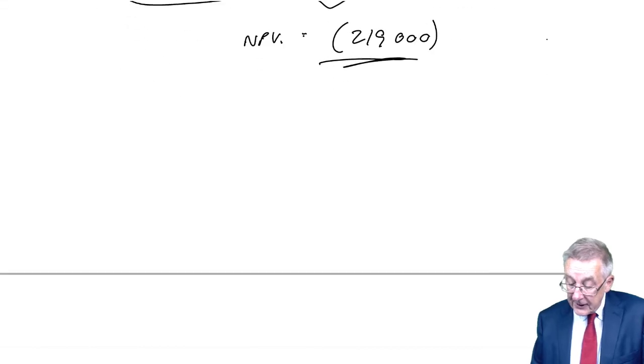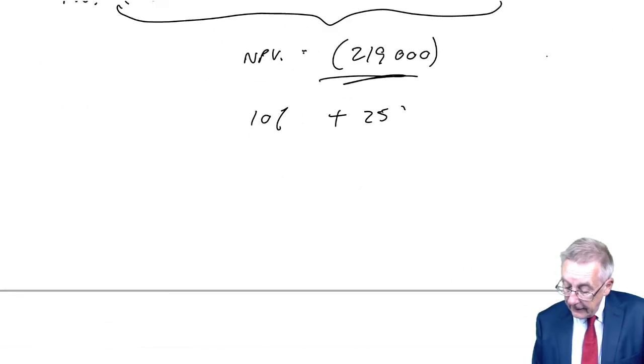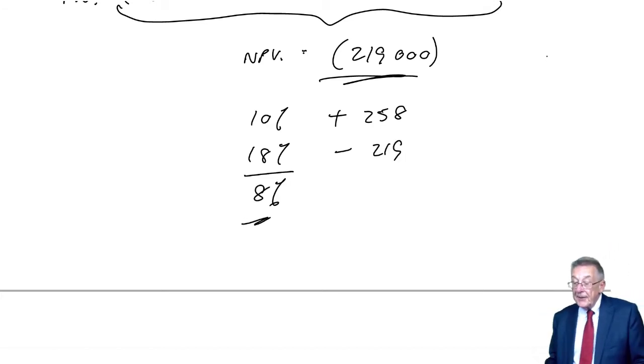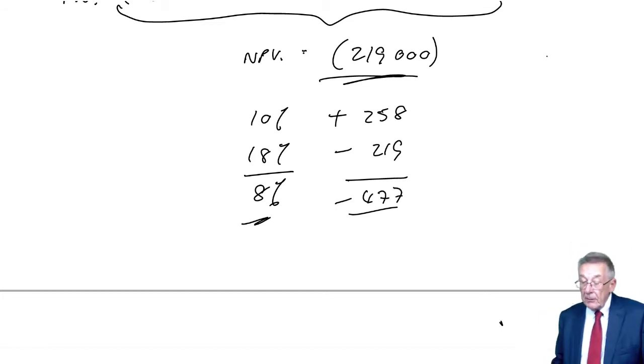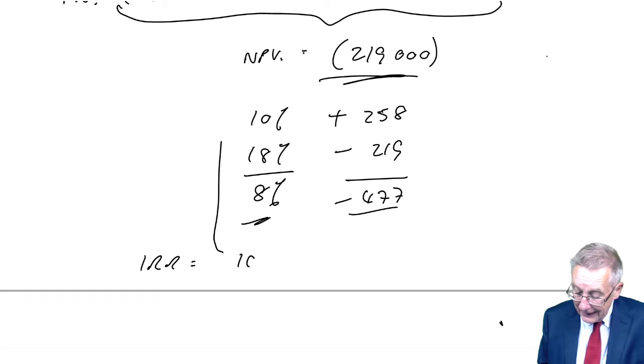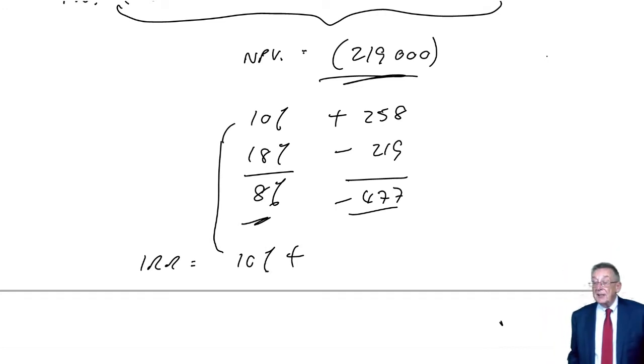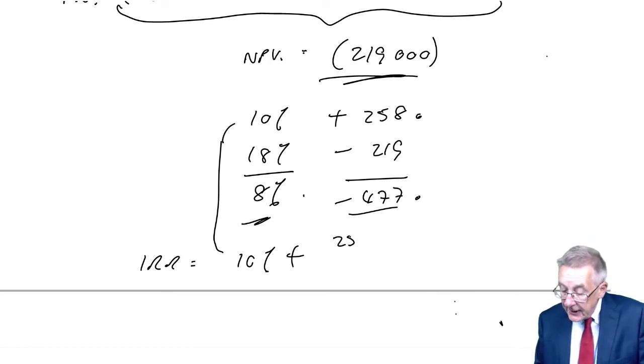10% was plus 258, 18% was minus 219. So for a change of eight percentages, the net present value fell from 258 positive to 219 negative. The total fall, 477. Which means the internal rate of return: we'll start with our first guess of 10%. We know it's higher than 10%. To get zero, we need a fall of 258. We know 477 is eight percentages. So it's this fraction, 258 over 477 times 8%.